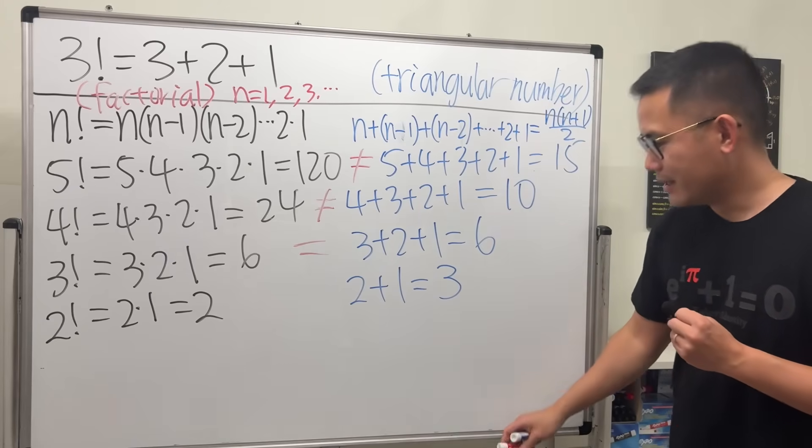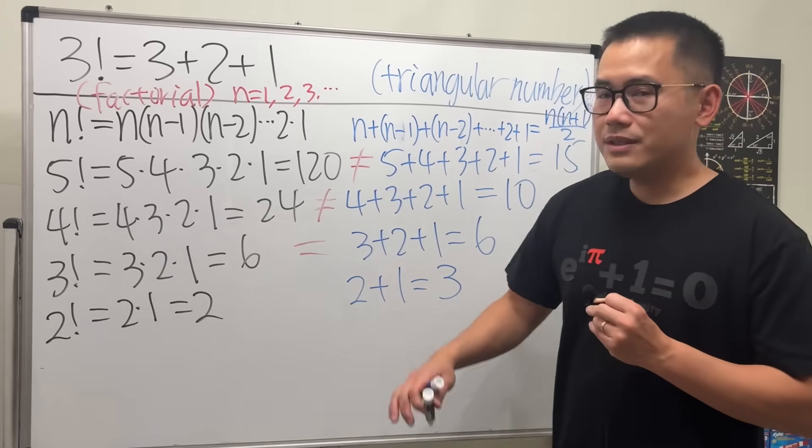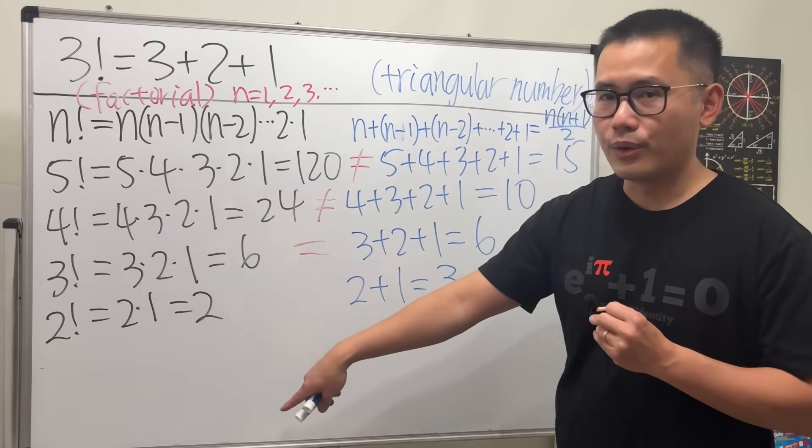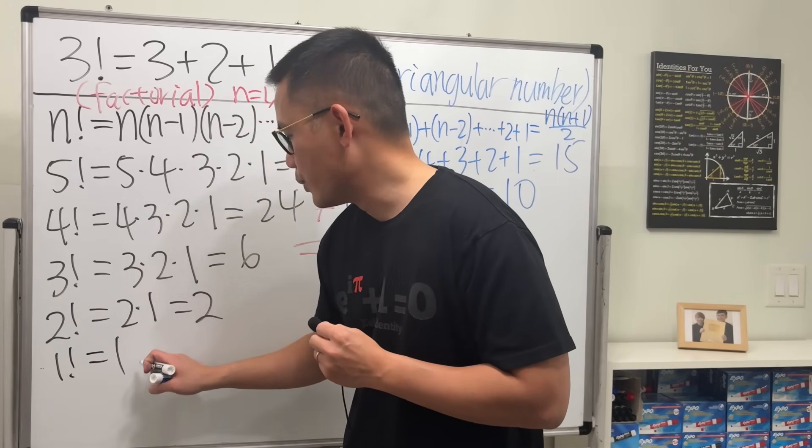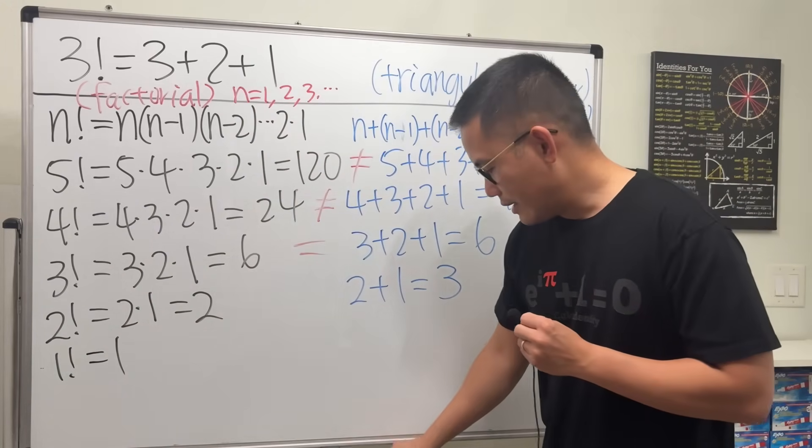the rest of factorial? If you do 1 factorial, this is just going to be 1. Now here's a nice pattern: if you go to 0 factorial, what's the answer for that? If you look at the right...